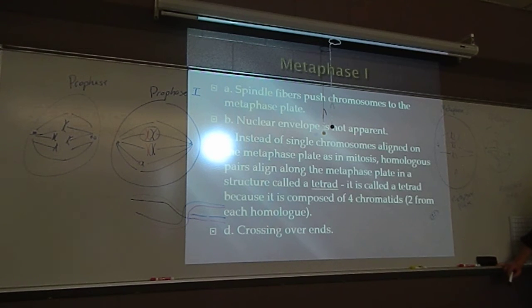Crossing over has since ended. It may go into metaphase one a little bit, but by the end of metaphase one, it's stopped. So those are the two major differences of meiosis one in those two phases than mitosis.